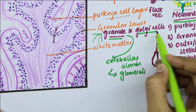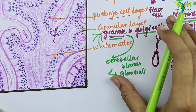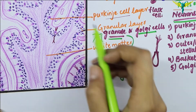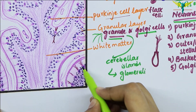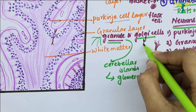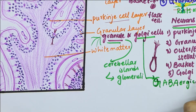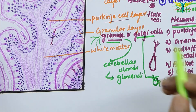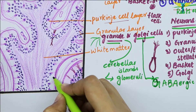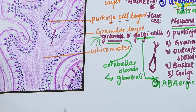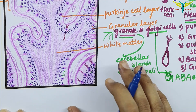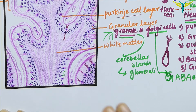Coming to the Golgi cells, the Golgi neurons are large stellate cells that lie in the granular layer just deep to the Purkinje cells. Remember, the Golgi cells are GABAergic inhibitory neurons. Their dendrites enter the molecular layer where they branch profusely and synapse with the parallel fibers present in the molecular layer.